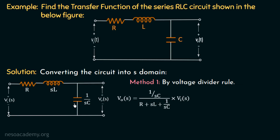Let us verify this. We have three elements in this circuit: the resistor having impedance R, the inductor having impedance SL, and the capacitor having impedance 1 over SC. The total impedance of this circuit is R plus SL plus 1 over SC, since these three elements are present in series. The output voltage measured across the capacitor is Vout equal to 1 over SC, the impedance of the capacitor, over the total impedance, multiplied with the input voltage Vi.